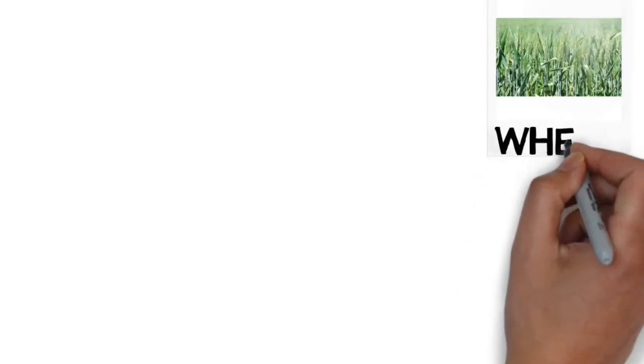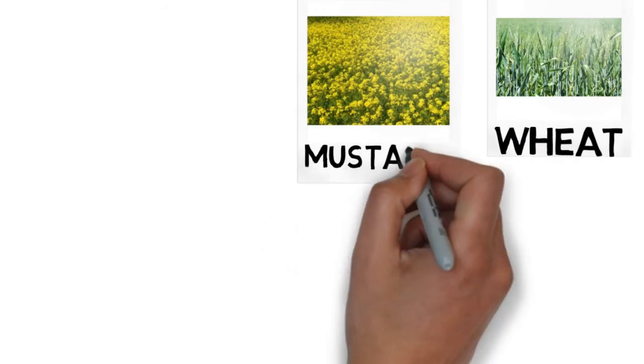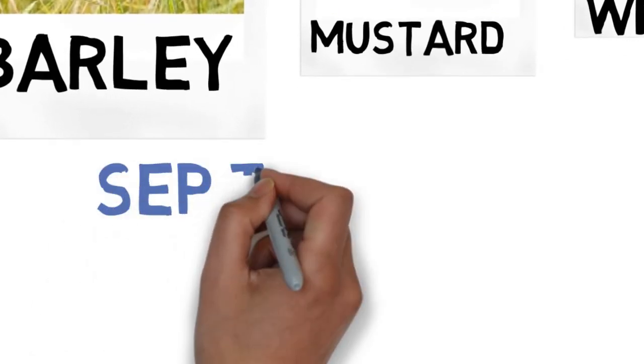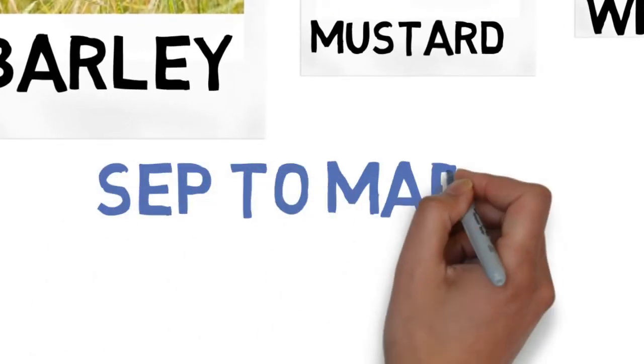Crops like wheat, mustard, barley, green seeds, etc. are some examples of Rabi crops, which are also known as winter season crops because they are grown somewhere between September to March in Nepal.